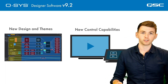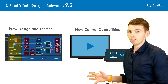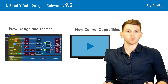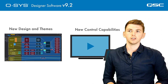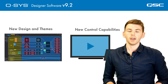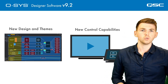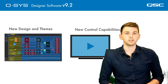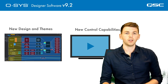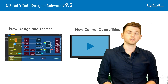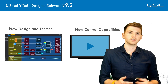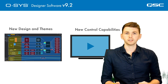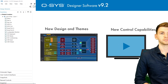Firstly, we have the much requested dark mode, which comes as part of a general refresh of the QSYS Designer UI, and also many new control capabilities. You can now do CEC control with the NV32, and there's also a bunch of improvements to CSS styling for UCIs. So let's take a look at those features right now.